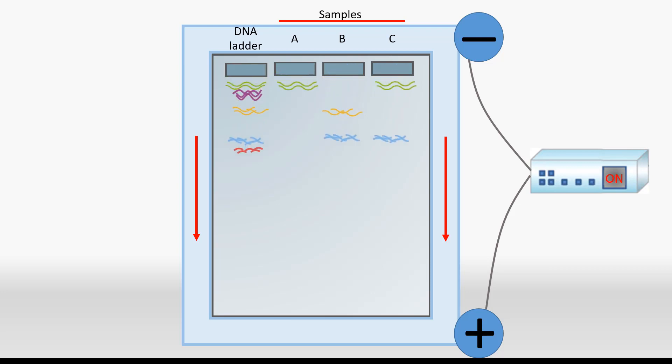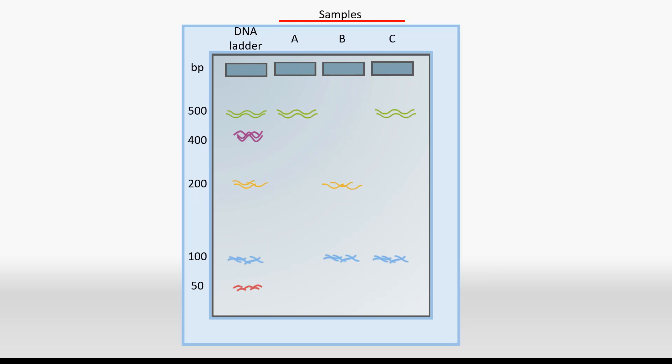Because fragments of the same size run at the same speed, we can use the positions of the ladder markers to determine the sizes of the other DNA fragments in the rest of the samples. For example, lanes A and C both have bands at the same position as the 500 base pair marker, telling us that these fragments are approximately 500 base pairs in length, while lanes B and C have bands that are approximately 100 base pairs in length.